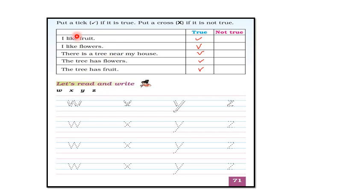Children, the first exercise given here is very interesting and simple. You just have to put a tick mark if it is true or a cross mark if it is not true. Can we start now?